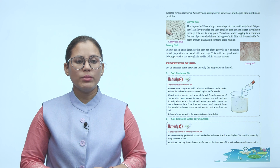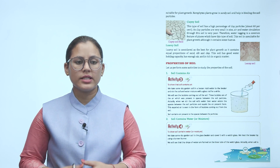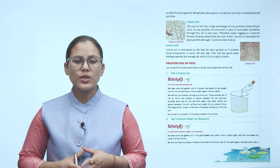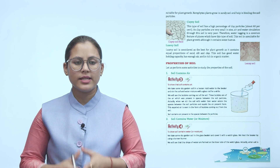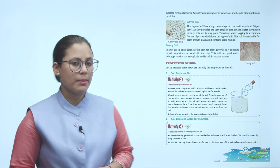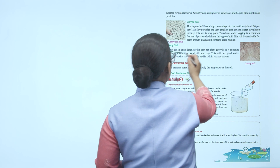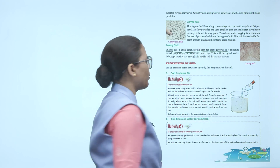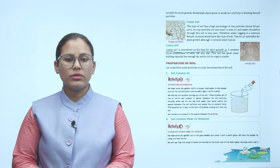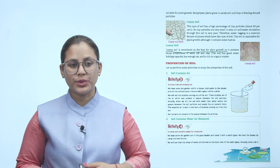Clay soil has a high percentage of clay particles, about 60%. As clay particles are very small in size, air and water circulation through the soil is very poor. Therefore, waterlogging is a common feature of places which have this type of soil. This soil is unsuitable for plant growth although it contains some humus. Loamy soil is considered the best for plant growth as it contains equal proportions of sand, silt and clay. This soil has good water holding capacity, has enough air and is rich in organic matter.